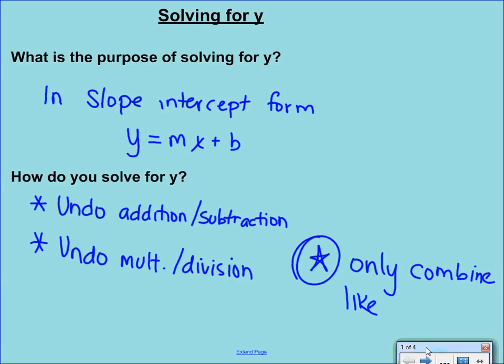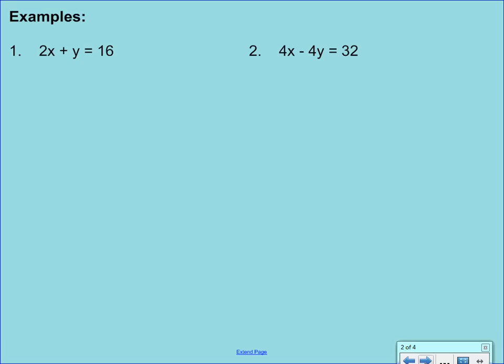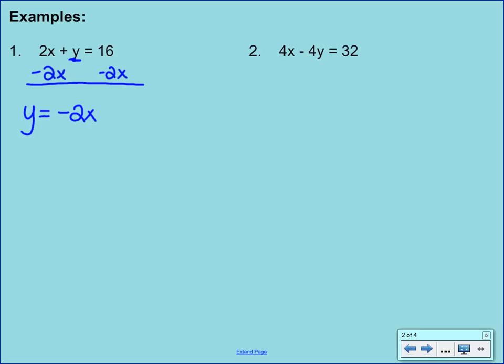So now, let's get into some examples. The first one that you see up here is 2x plus y equals 16. So the first thing that we want to do is underline our y so we know that that's what we have to get all by itself. So then what else do you see on the same side of the y? You should see that 2x. We want to undo it, so let's subtract 2x from both sides of the equation. On the left-hand side, all we have left now is our y. On the other side, we can combine our like terms, which hopefully you see, you can't combine those. So we have negative 2x plus 16, and we are simply done with that problem because our y is by itself.